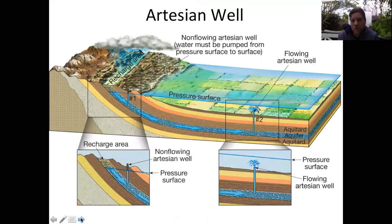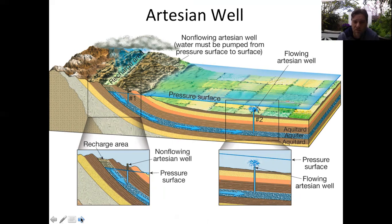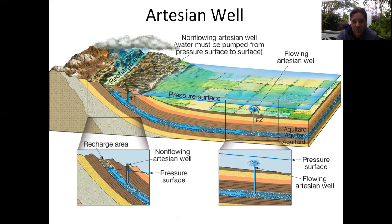Another topic is artesian wells. When groundwater gets squeezed between layers, pressure builds up. If the recharge area is at a higher elevation than the area being drilled, water will rise to the surface on its own when you drill into it — not like a geyser, but it flows up naturally. In the local Cerritos area there are definitely some artesian formations, and that's ultimately how the city of Artesia got its name.